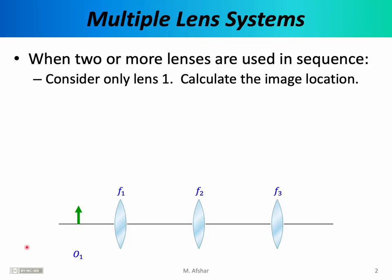In previous lectures, we've discussed the optics of mirrors and lenses. However, all the examples we considered always consisted of only one optical element — we always considered the image formed by only one lens or one mirror. In this lecture, we want to discuss multi-element systems: what happens when there are two, three, or four lenses, or a combination of lenses and mirrors. After all, most interesting optical systems like microscopes, telescopes, and cameras really do have more than just one lens or mirror.